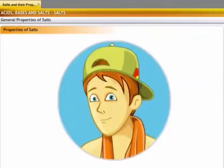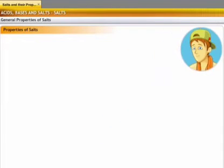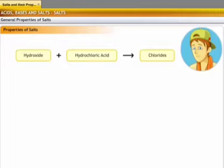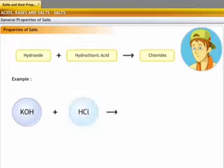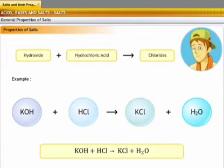Do you know how these salts get their name? Salts usually get their name from the acid which takes part in the reaction. Salts formed from any hydroxide and hydrochloric acid are chlorides. For example, potassium hydroxide reacts with hydrochloric acid to form a salt called potassium chloride.